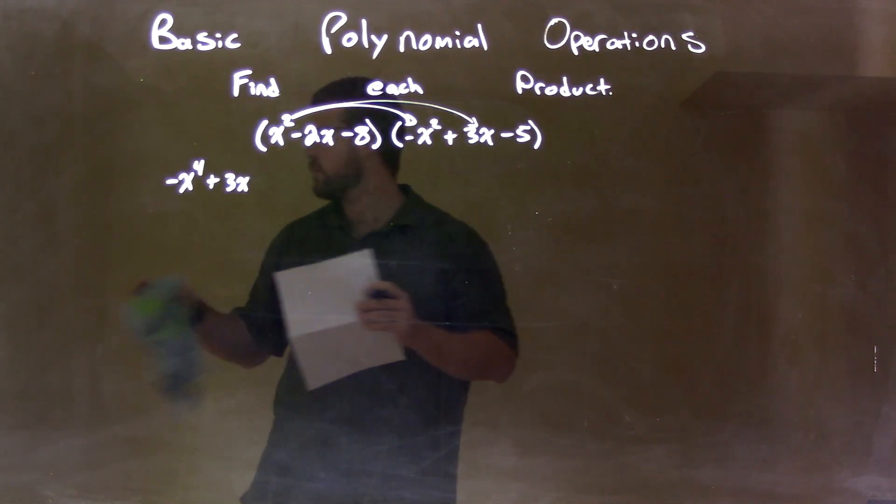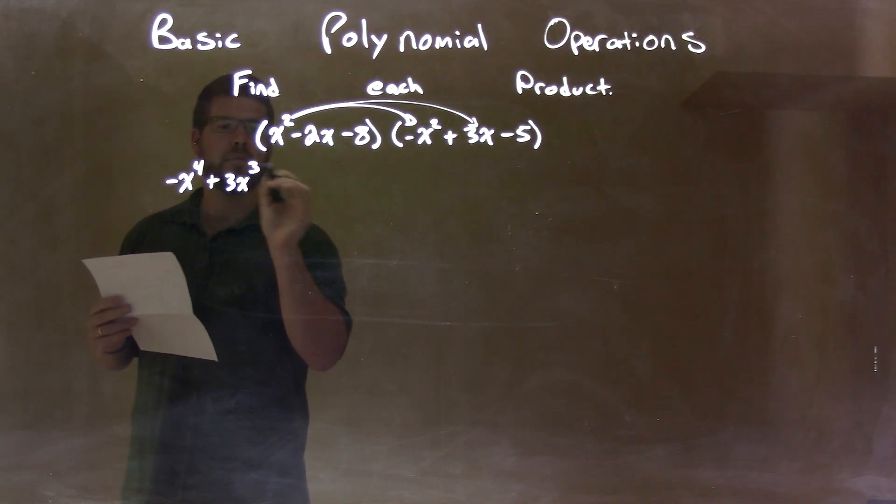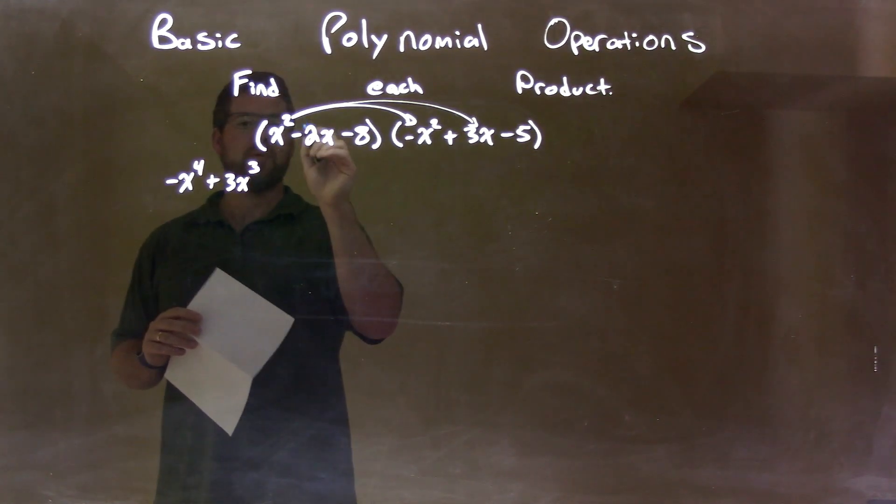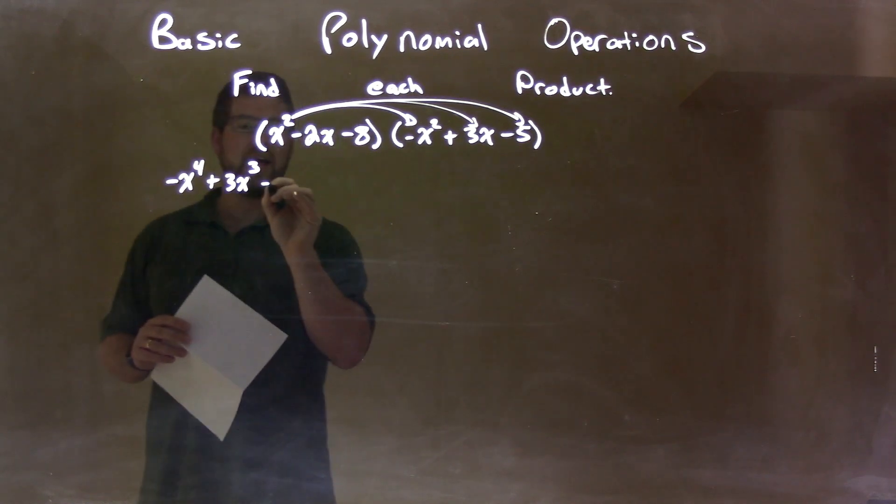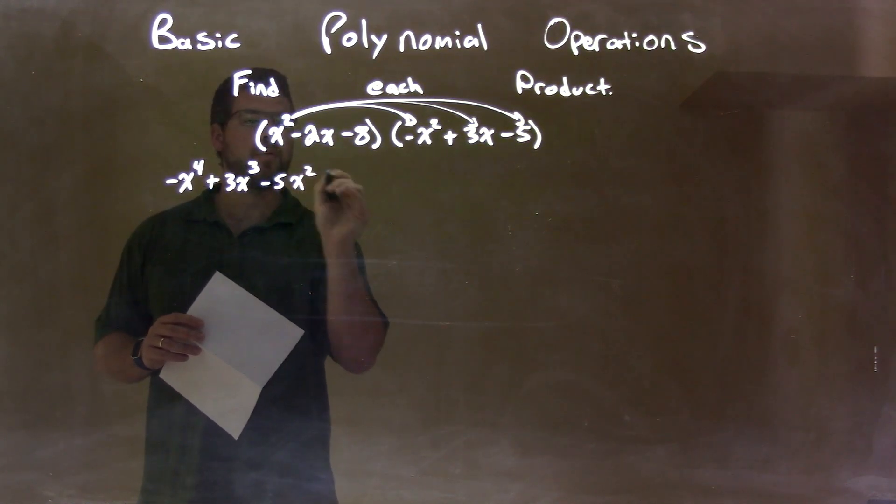Third power. Now, we have x squared times a negative 5 is a negative 5x squared.